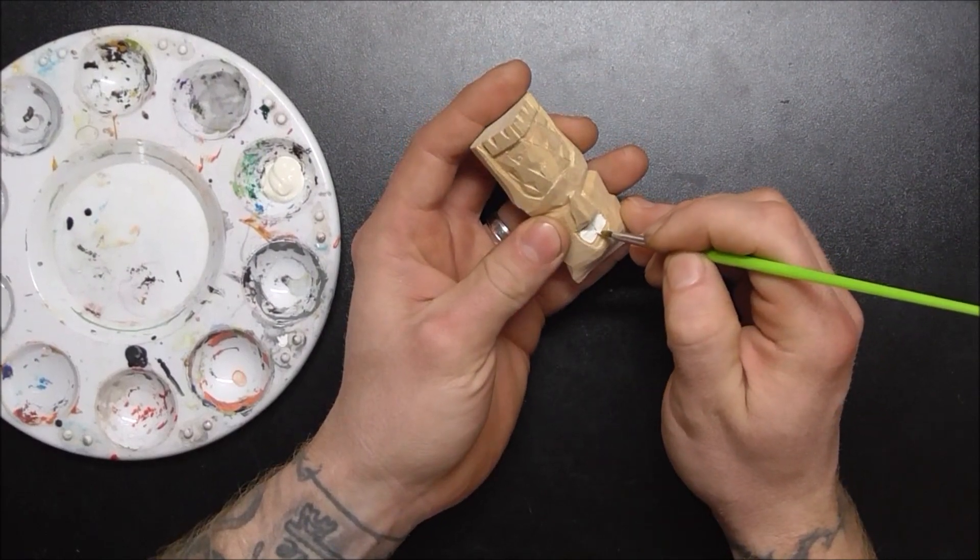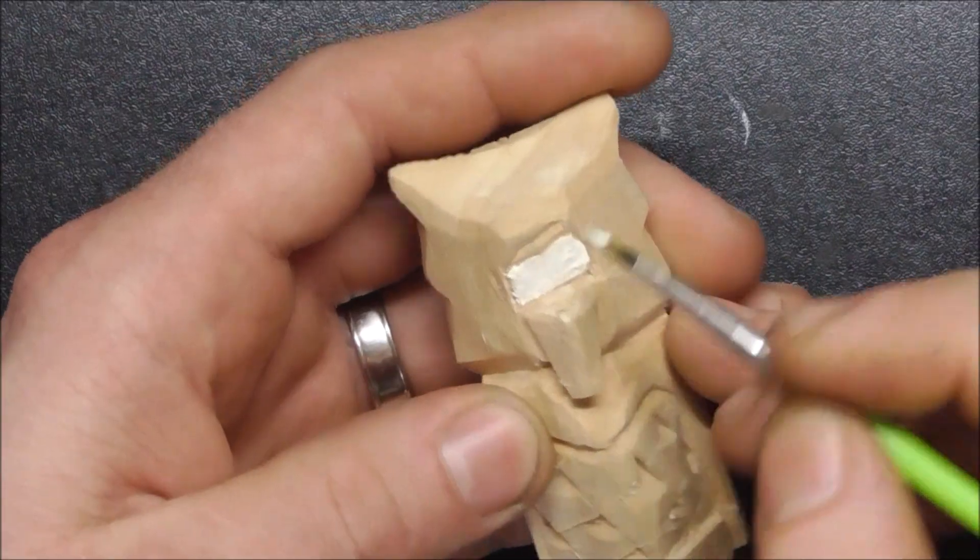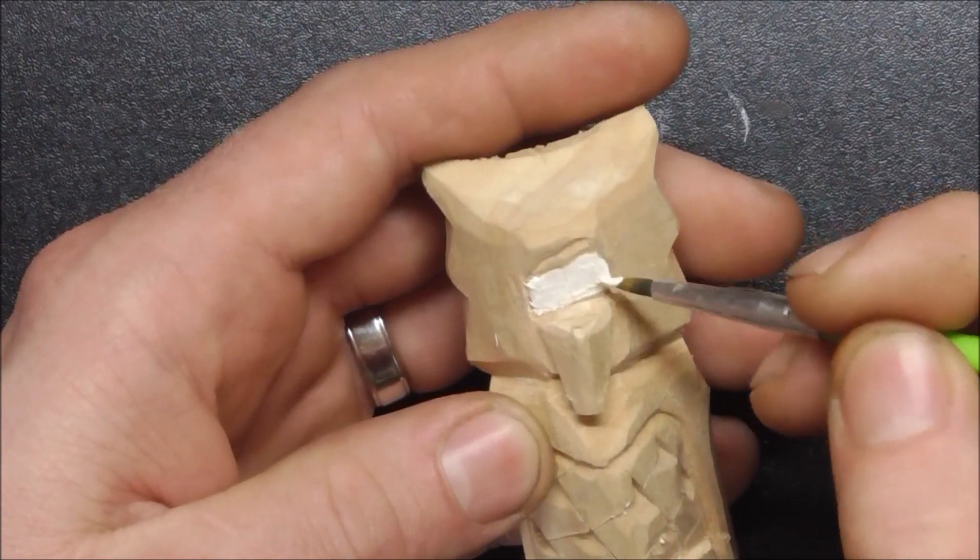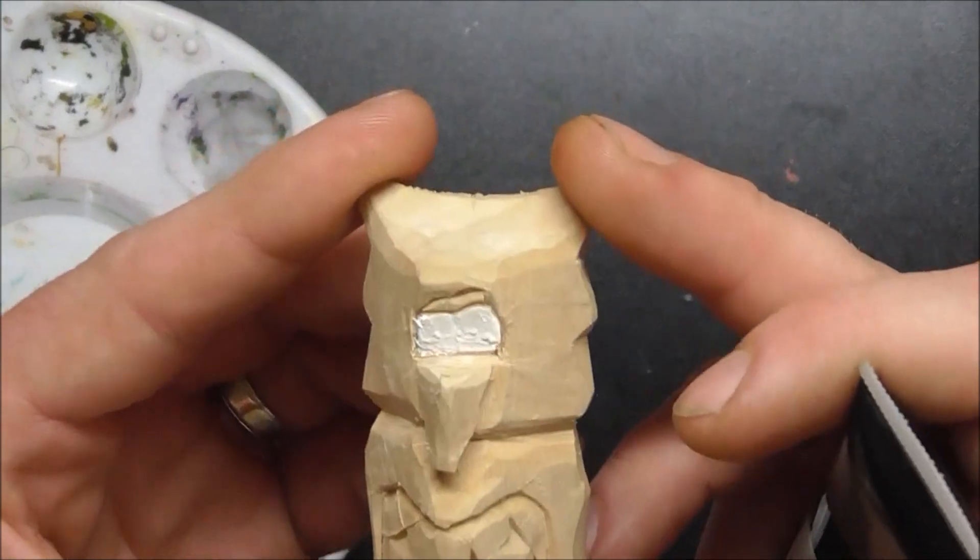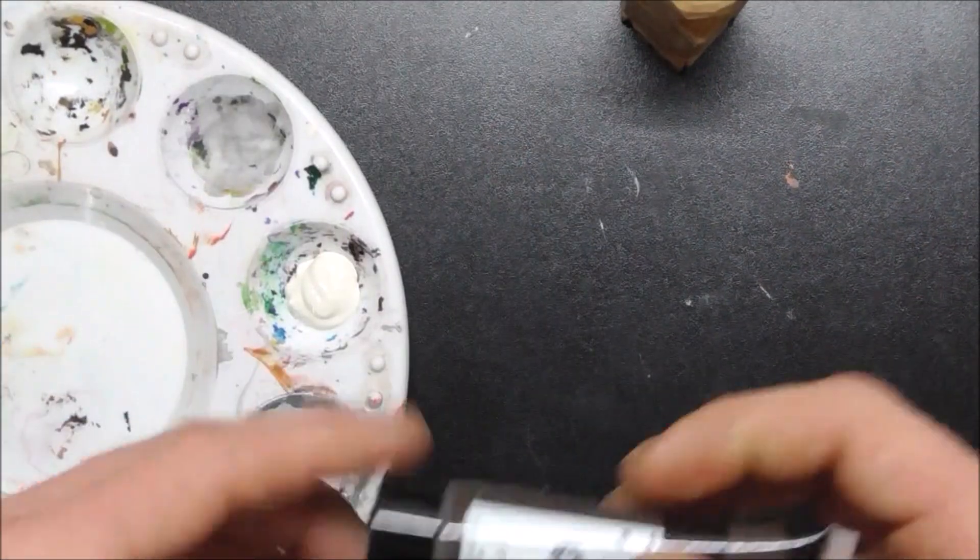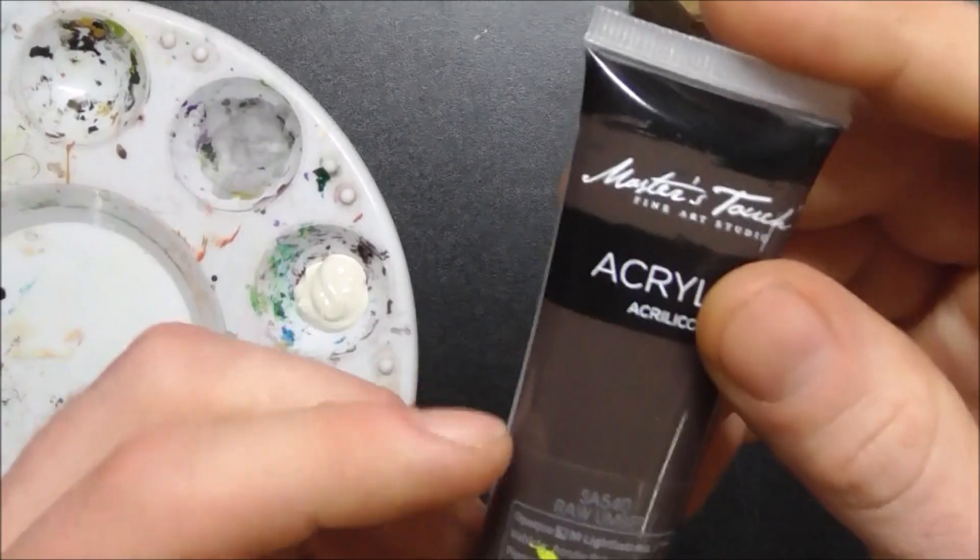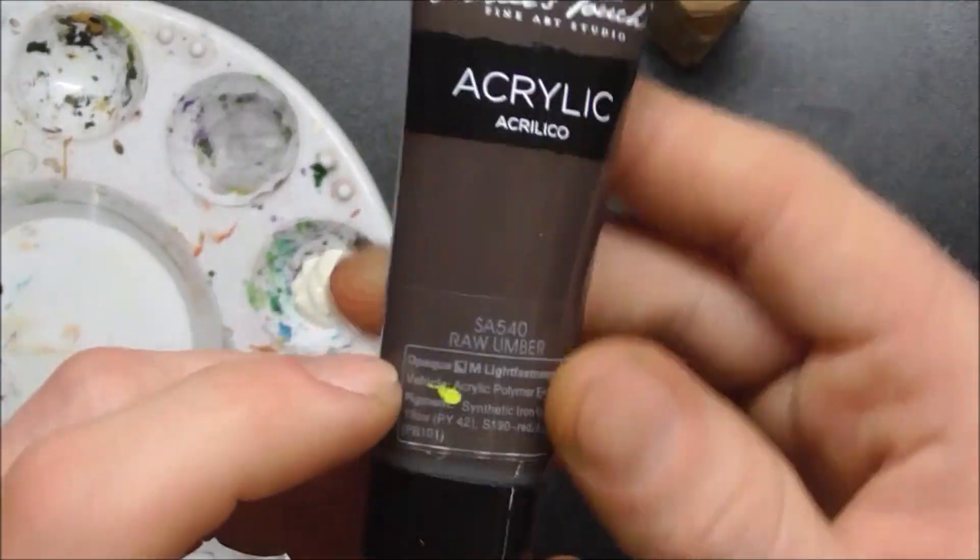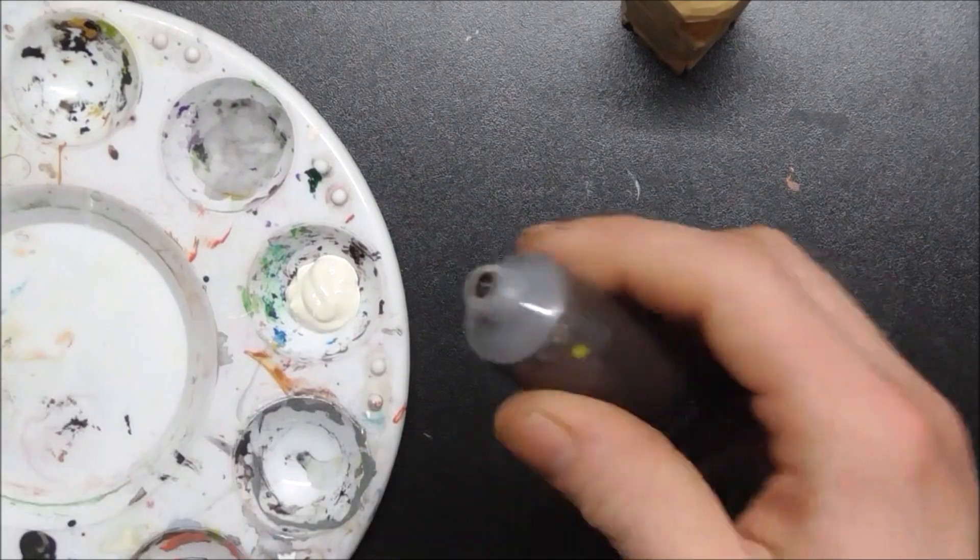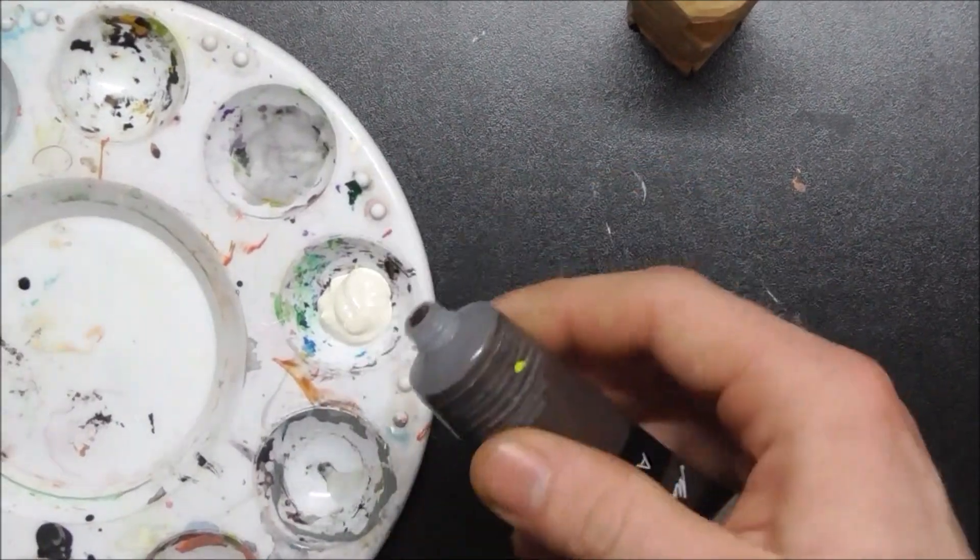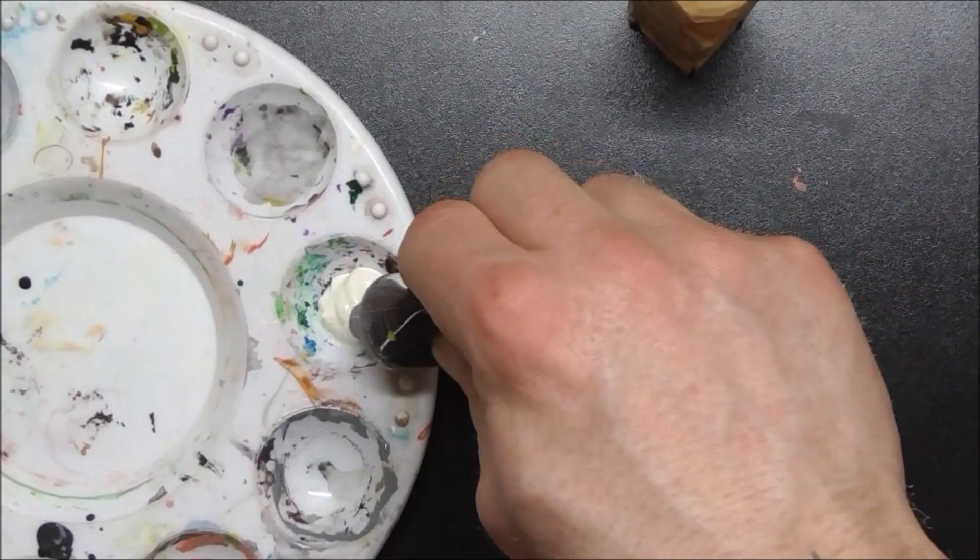I'm going to mix up the rest of this white with a little bit of brown, basically. This one's raw umber, but any brown will work if you have it. Just a little bit to start, mix it up, kind of try to get a light brown out of it.